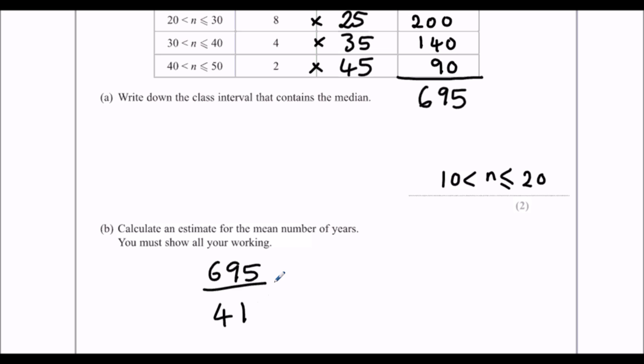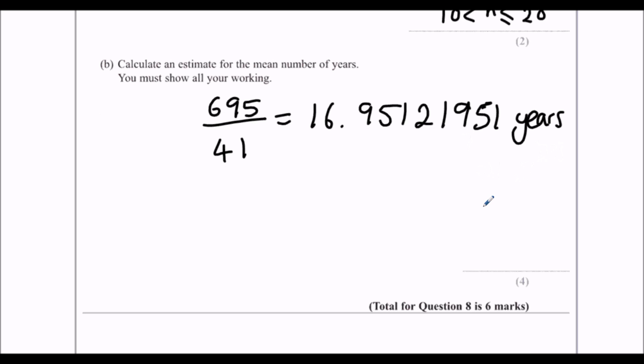Divide by how many. And that gives us, using the calculator again, 16.95121951 years. So this question isn't telling us how many decimal places or significant figures it wants us to give. So we can pick really. Let's just do two decimal places. So we'll do 16.95 years to two decimal places.